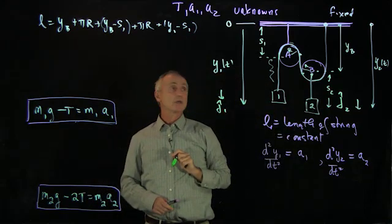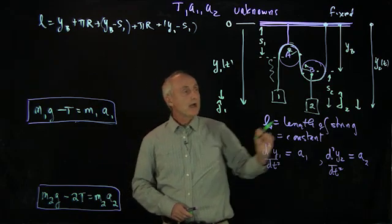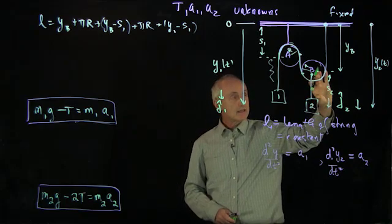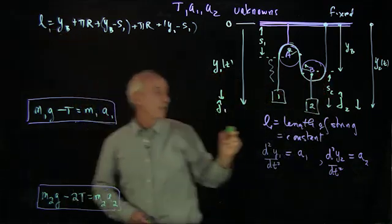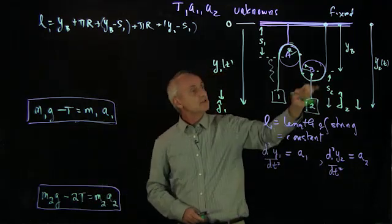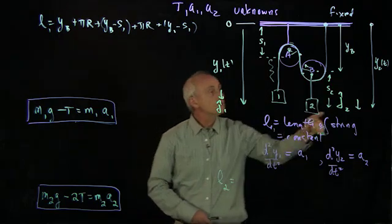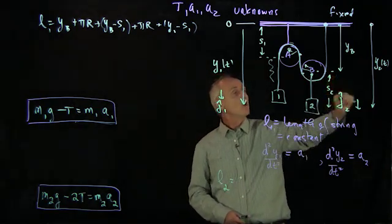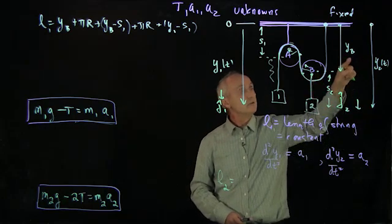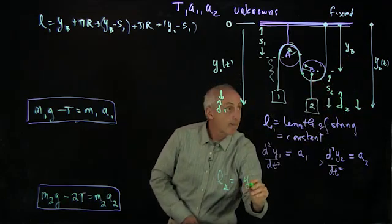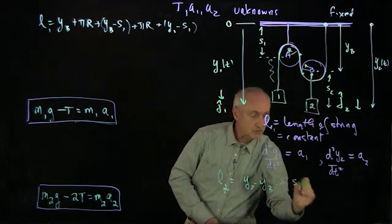We also have another constraint condition that this length of the string, we're going to call this l1. We have a second string here, l2. And l2 is given by y2. This length is y2 minus y_b, and that was what we call this constant s2.